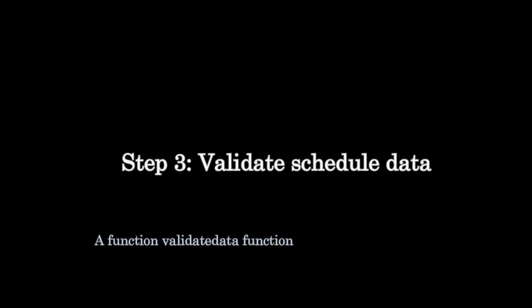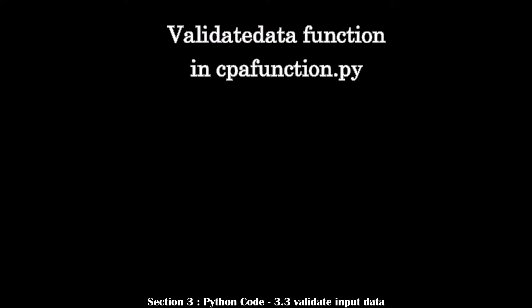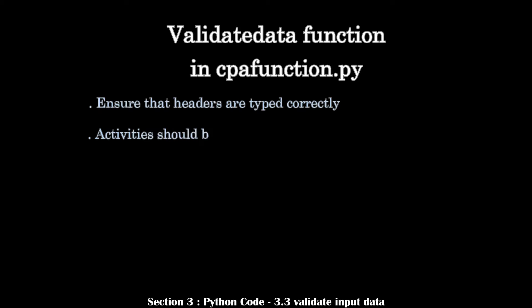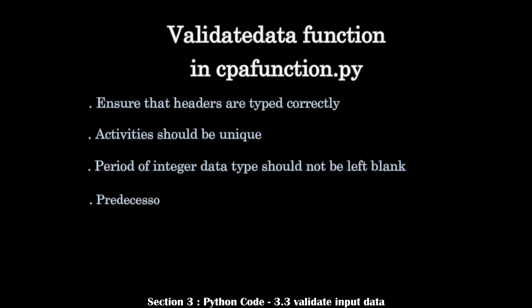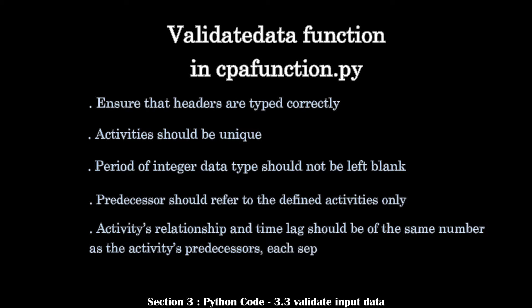To get around errors due to incorrect input data, it is necessary to validate the input data. The code is written in a function validate_data in cpa_function.py. Five validations are involved: ensure headers are typed correctly, activities should be unique, period (integer data type) should not be left blank, predecessor should refer to defined activities only, and activities' relationship and time lag should have the same count as predecessors, each separated by comma.